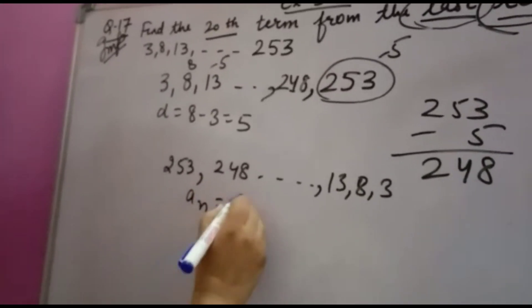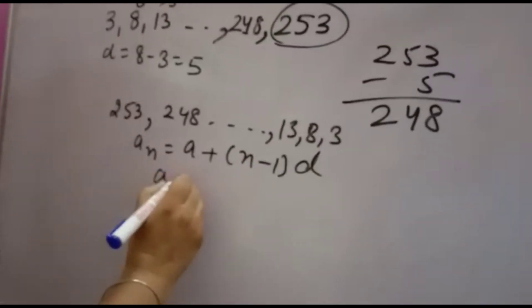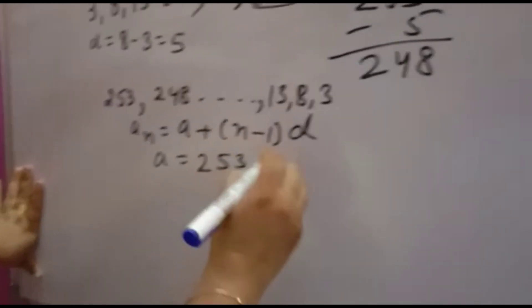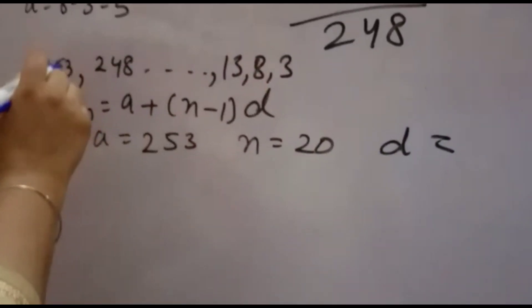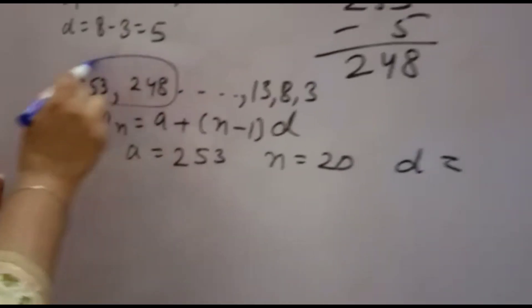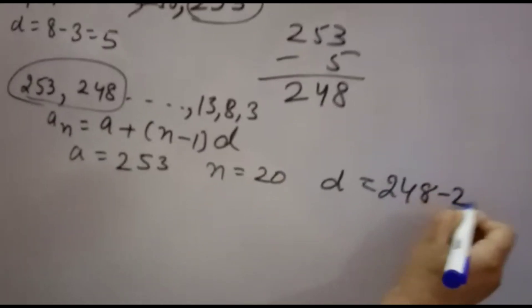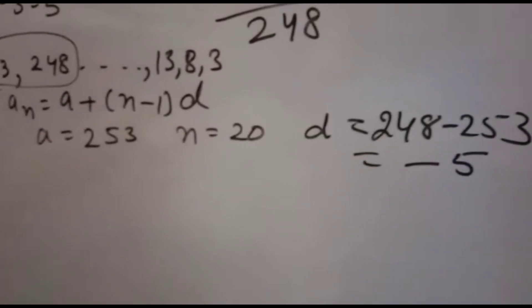Formula used will be AN equals A plus N minus 1 into D, where A is 253 and N is 20. D is, now see D carefully in this. D is not 5. D will be 248 minus 253, that will come minus 5.